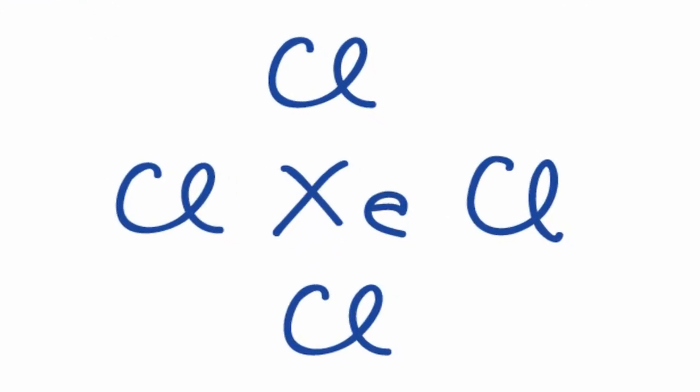For the XeCl4 Lewis structure, we have a total of 36 valence electrons. We'll put two between atoms to form chemical bonds, and then after that, we'll go around the outside atoms and fill the octets for the chlorine, or until we run out of electrons.